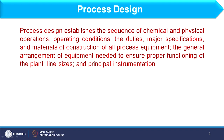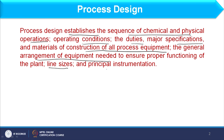As far as process design is concerned, process is the route to convert raw material into product. Process design basically establishes the sequence of chemical and physical operations, operating conditions, duties, major specifications, material of construction of all process equipment, arrangement of the equipment needed to ensure proper functioning of the plant, line size, and finally the principle instrumentation. Process design connects all these factors which are associated with the process.